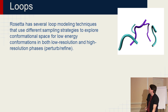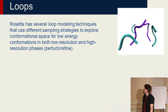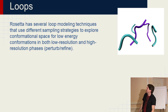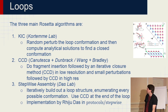There are actually several loop modeling techniques currently in Rosetta and many of them are under continuous development. We have low resolution and high resolution phases. We usually call the low resolution phase 'perturbing' and the high resolution phase 'refining' — that tends to be the terminology that gets thrown around.